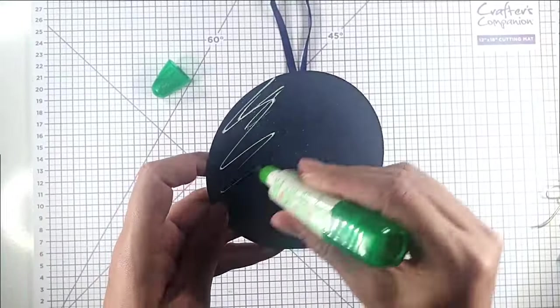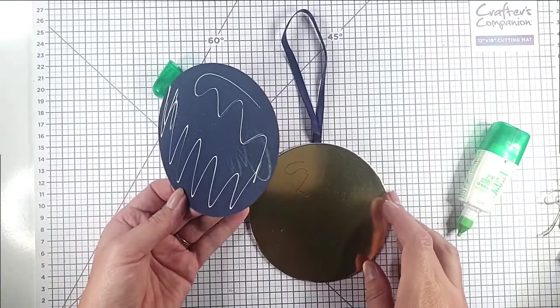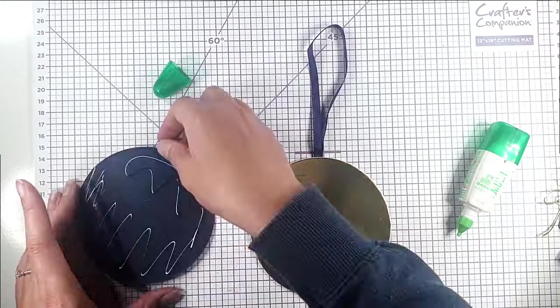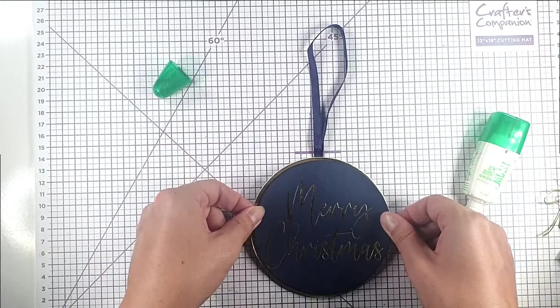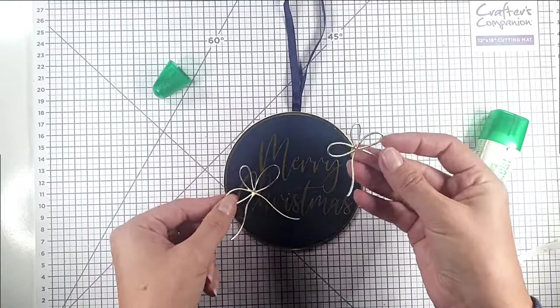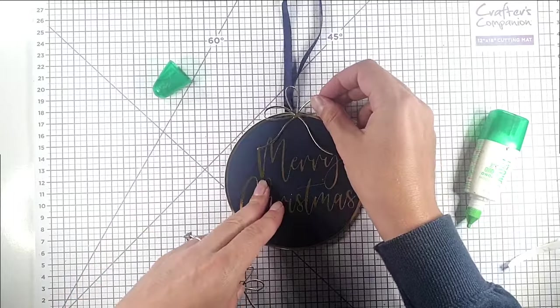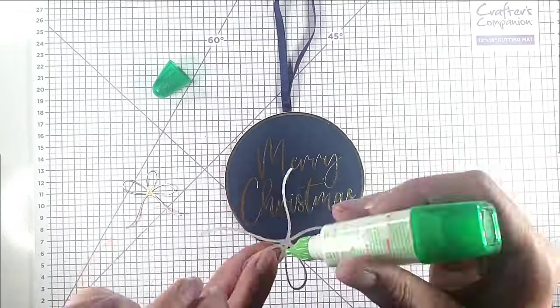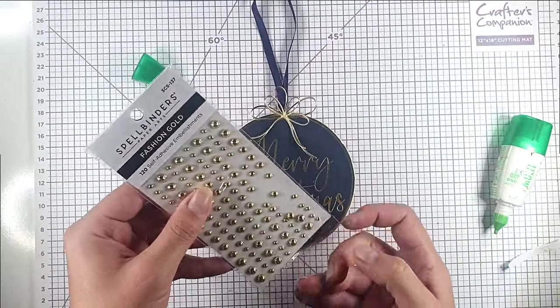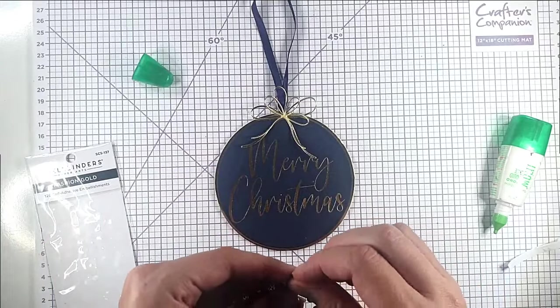I'm going to add my Merry Christmas and obviously when you add it, it's really important to make sure that this hanger is at the top. I've cut these bows from the pretty bows die set and I'm going to pop those at the top here. Then I'm going to add this fashion gold gem from Spellbinders in the middle just to finish that off nicely.